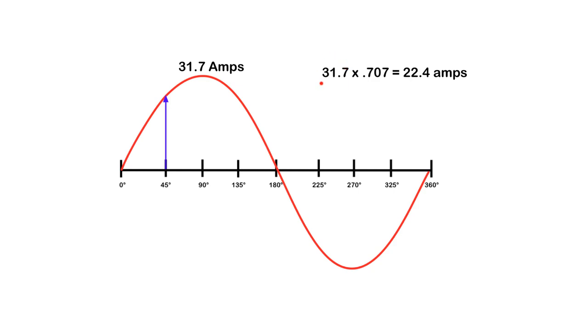I would just take 31.7 times 0.707 to get 22.4 amps. And that would be my effective value. That's the value that my AC ammeter would read if I had it hooked up to this circuit.